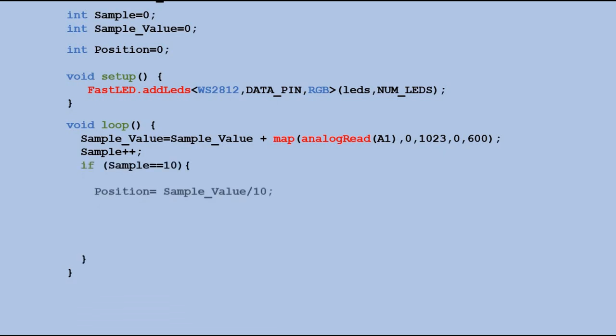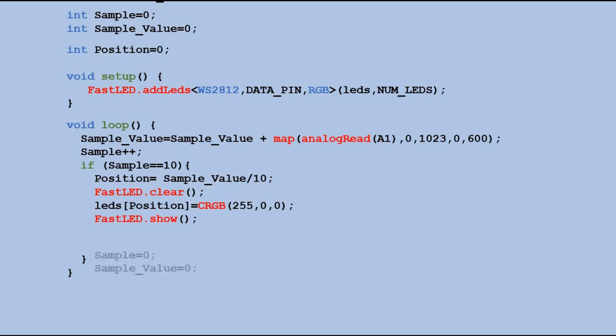Only when the sample variable is equal to 10, we divide sample value variable by 10 and assign it to position variable. Then we lit the currently selected LED in the same way like in the last example. And when done, we set both sample and sample value variables to zero, ready to process another sample of 10 potentiometer readings.